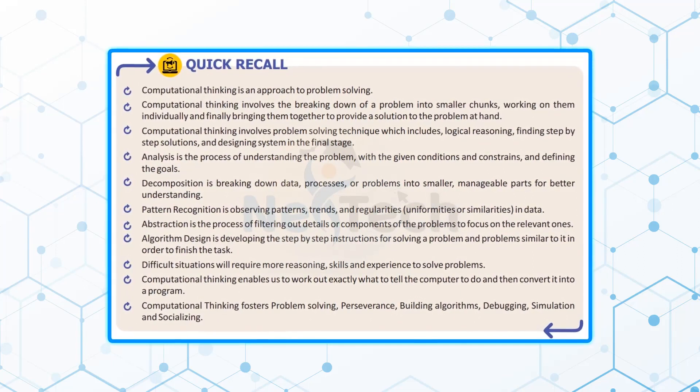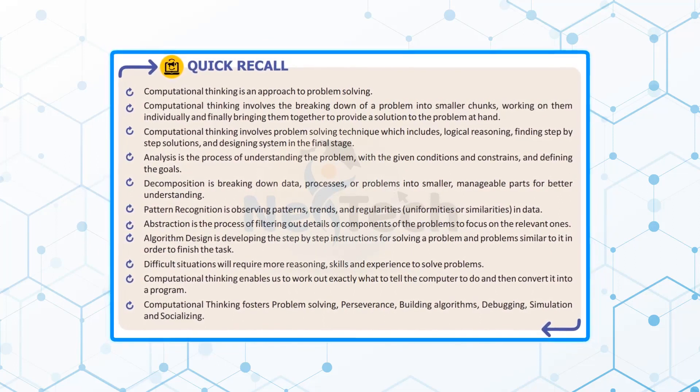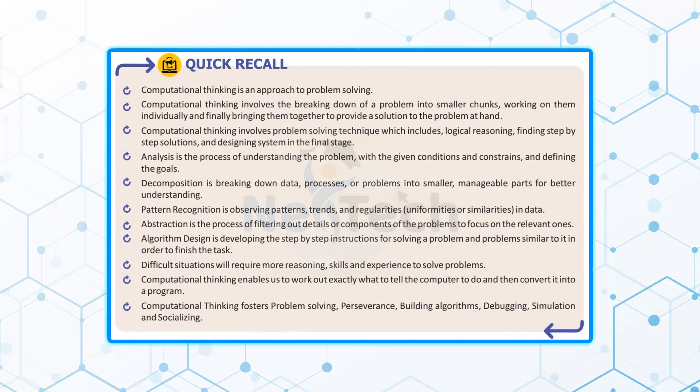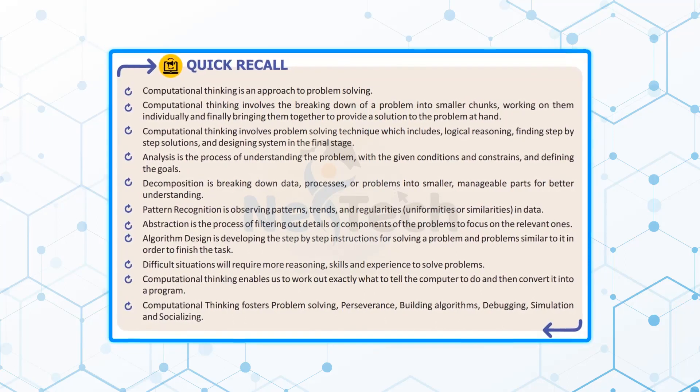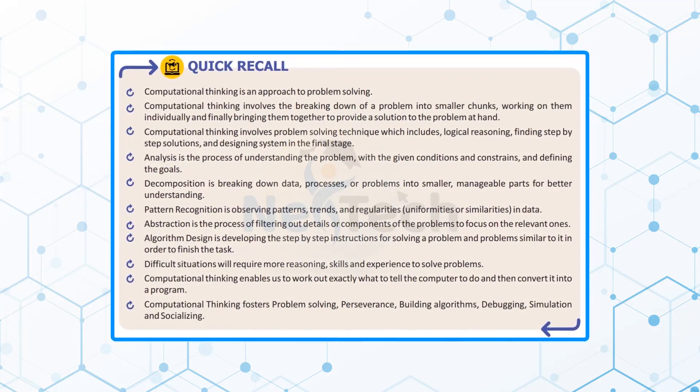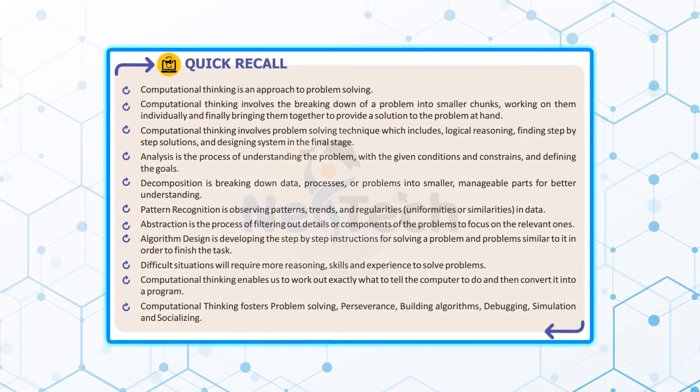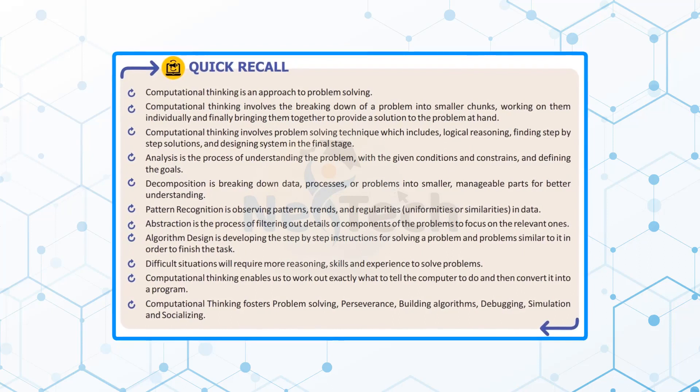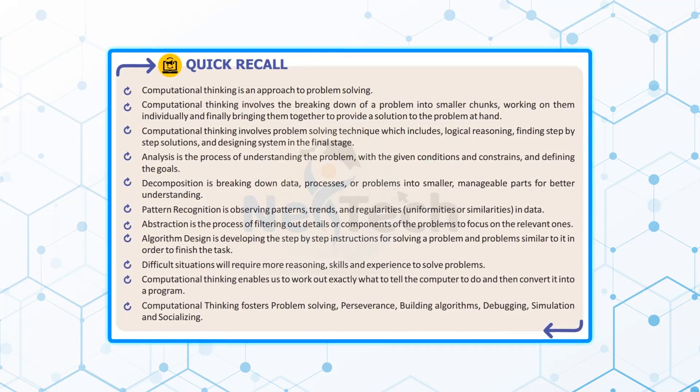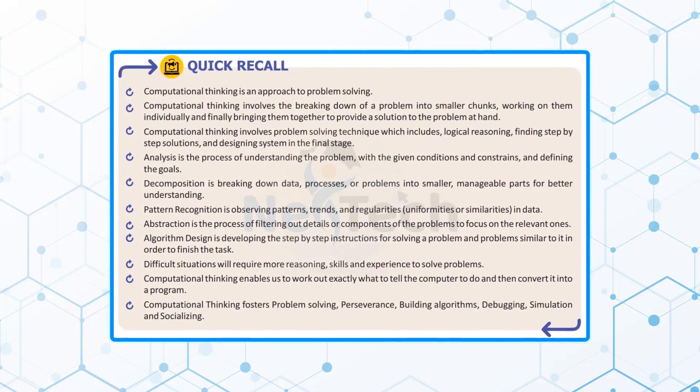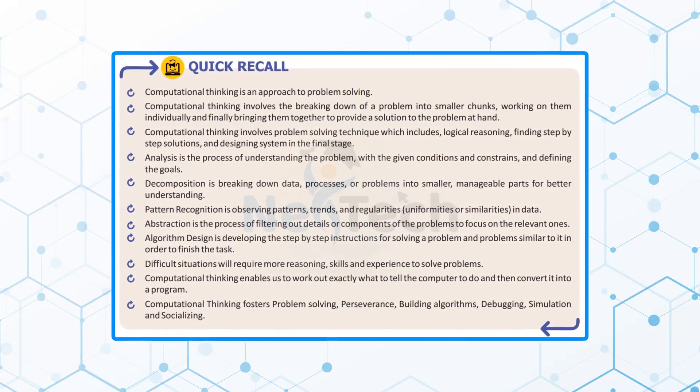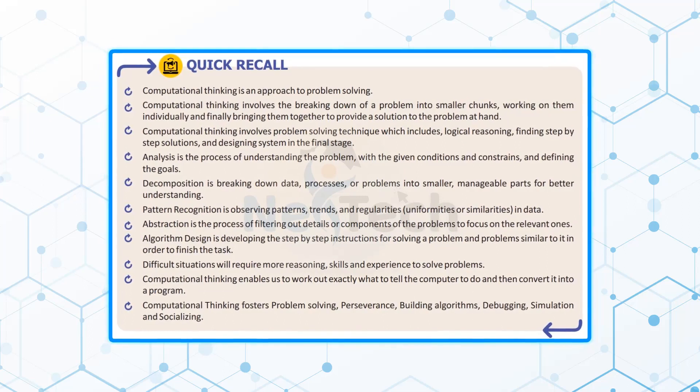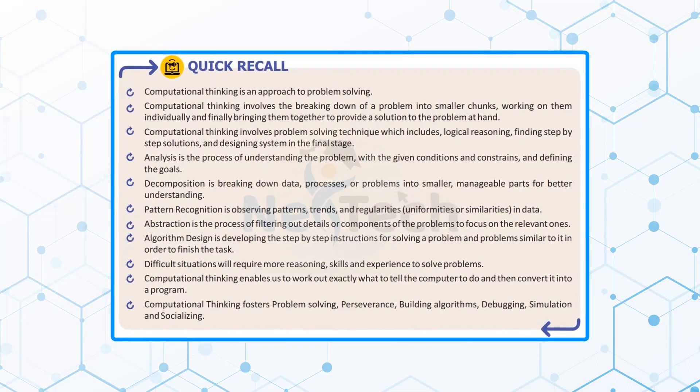Abstraction is the process of filtering out details or components of the problems to focus on the relevant ones. Algorithm design is developing the step-by-step instructions for solving a problem and problems similar to it in order to finish the task. Difficult situations will require more reasoning, skills and experience to solve problems. Computational thinking enables us to work out exactly what to tell the computer to do and then convert it into a program. Computational thinking fosters problem solving, perseverance, building algorithms, debugging, simulation and socializing.